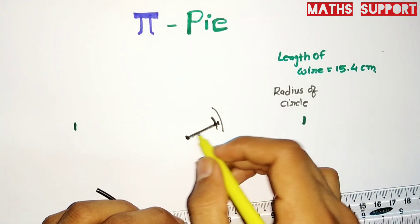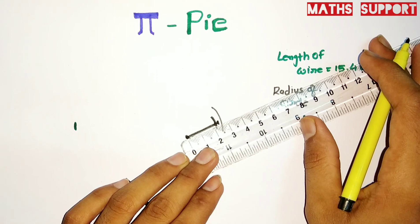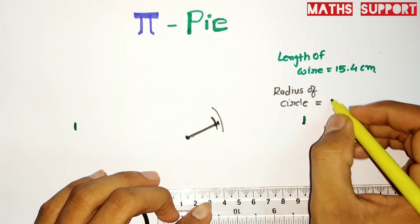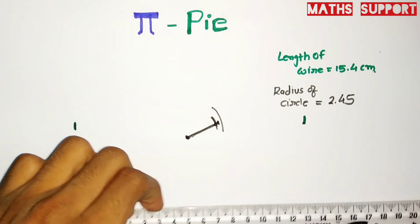It was 2.42, 2.4 something, so I'm now taking the radius equal to 2.45.